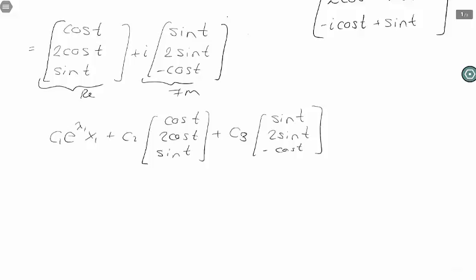Okay, so we took care of our complex eigenvalues. We still had the real eigenvalue. The real eigenvalue was -4, and its corresponding eigenvector was [1, 1, 1].